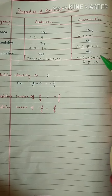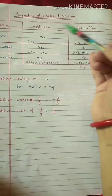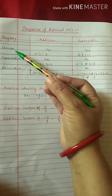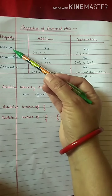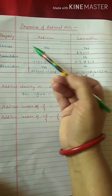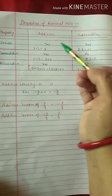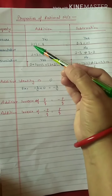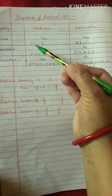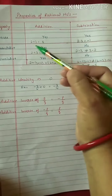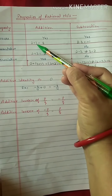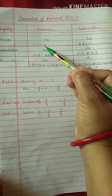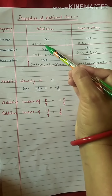Now we will discuss a few properties of rational numbers, starting with addition. First property is the closure property: if you add two rational numbers, the answer should also be a rational number. Taking integers 2 and 3 as examples — 2 plus 3 equals 5, and 5 is also a rational number. So closure property holds for addition.